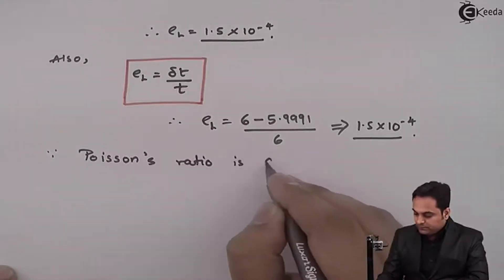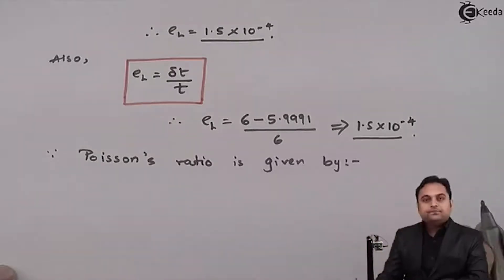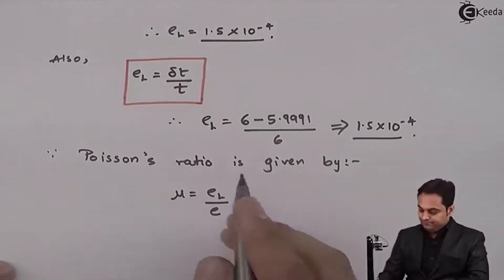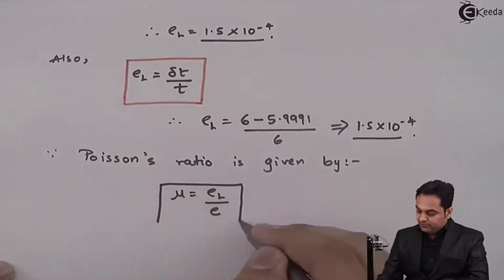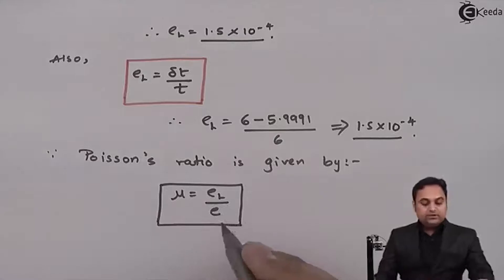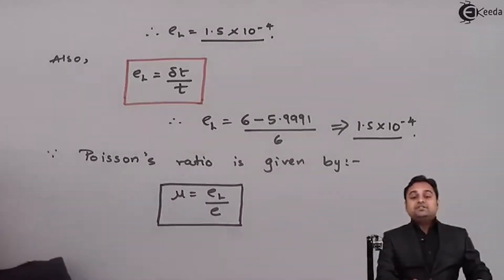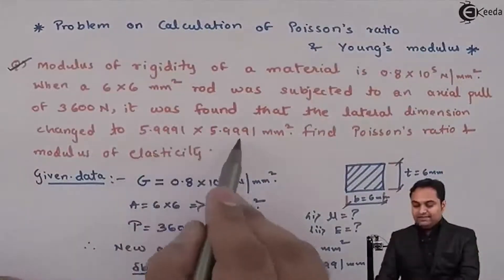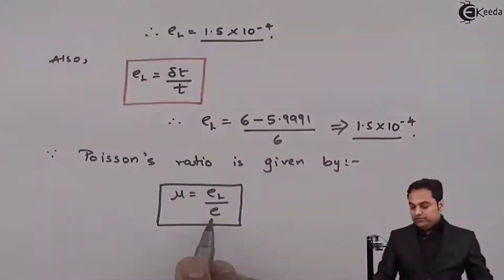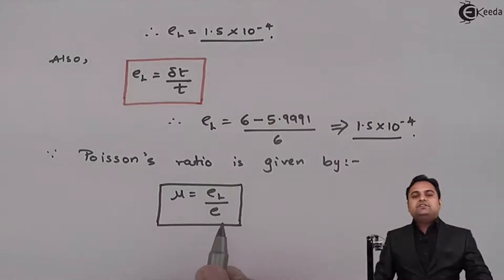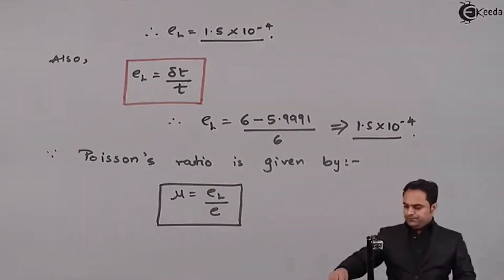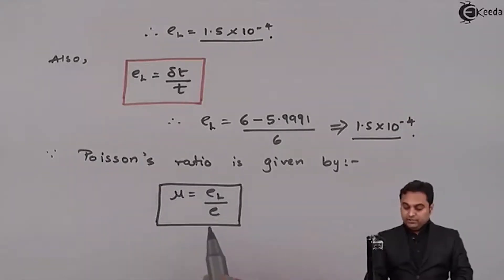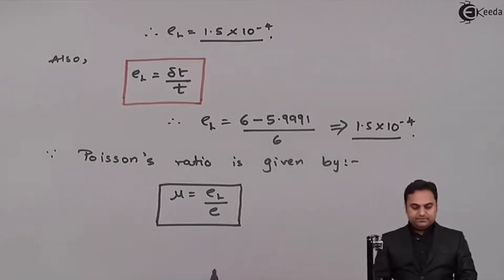Since Poisson's ratio is given by lateral strain upon linear strain, we need the linear strain. However, in this problem they have not given us how much is the change in length — only the change in width and thickness. So we cannot calculate strain using change in length upon original length. Instead, we use Hooke's law: Young's modulus is equal to stress upon strain, so strain is equal to stress upon Young's modulus.